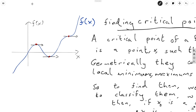So roughly speaking, the point is that the tangent line to the graph at each of these points is flat. So it's pretty obvious that this is a maximum, this is a minimum. This one over here is what we call a point of inflection — it's a point where you kind of change the concavity of your curve.